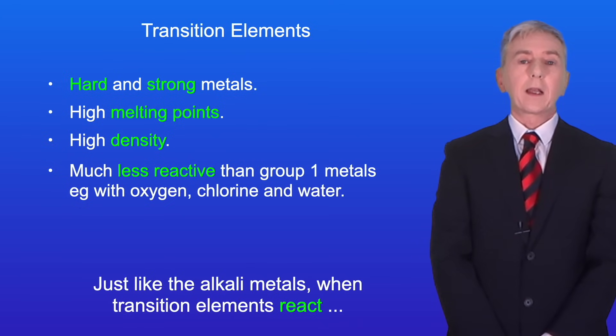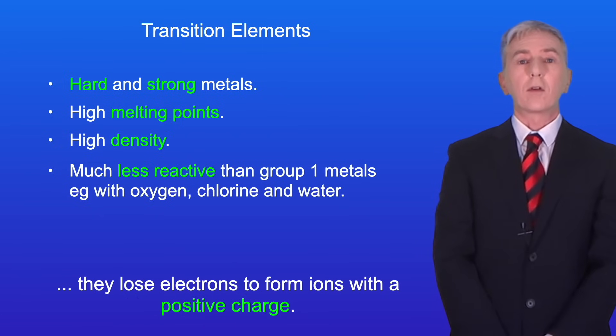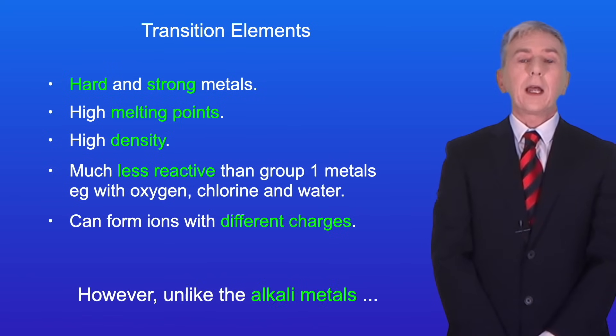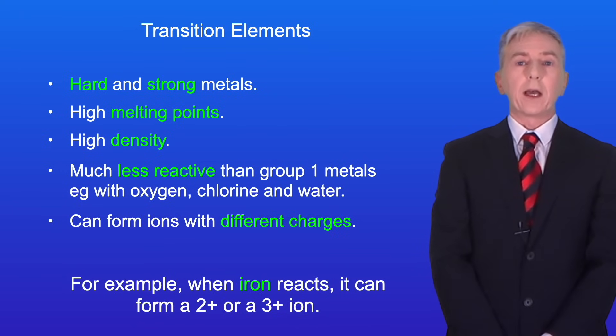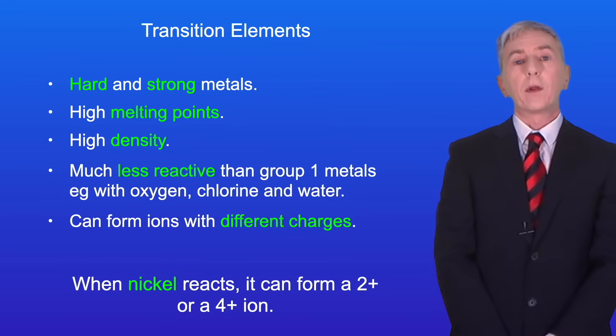Now just like the alkali metals, when transition elements react, they lose electrons to form ions with a positive charge. However, unlike the alkali metals, transition elements can form ions with different charges. For example, when iron reacts, it can form a 2 positive or a 3 positive ion. And when nickel reacts, it can form a 2 positive or a 4 positive ion.